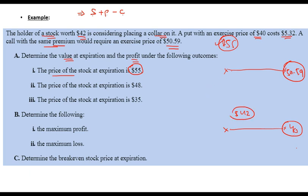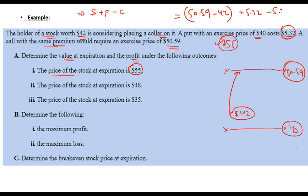The profit when price = $55: you went from $42 to $50.59, so profit from stock is $50.59 − $42. You sold the call and received a premium of $5.32, and since both premiums are equal, they cancel out. Net profit is $8.59.